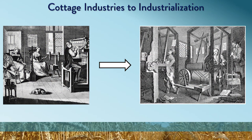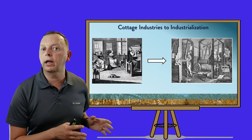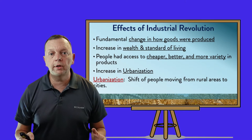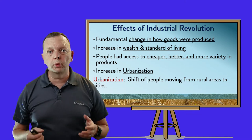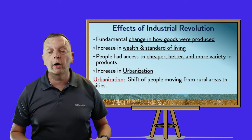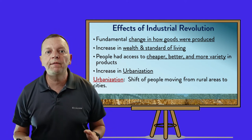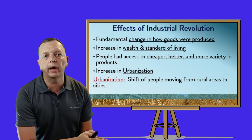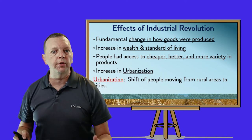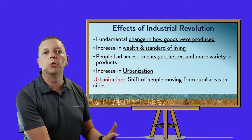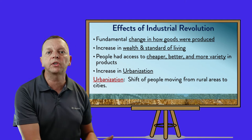Because of the technological advances of the Industrial Revolution, these factories could produce in one day ten times what a person in a cottage industry could make in an entire year. The biggest impact of the Industrial Revolution was that it fundamentally changed how goods were produced. It also increased the wealth and standard of living for people — they had better access to cheaper, better, and a greater variety of products. We also found an increase in urbanization, which is the shift of people moving from rural areas to the cities. The enclosure movement meant fewer people had to live on farms, but the factories were in the cities, so people moved from the countryside into the cities.